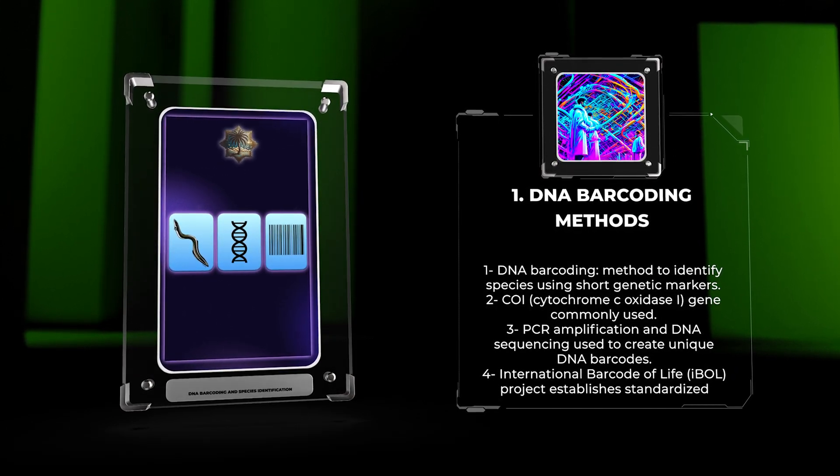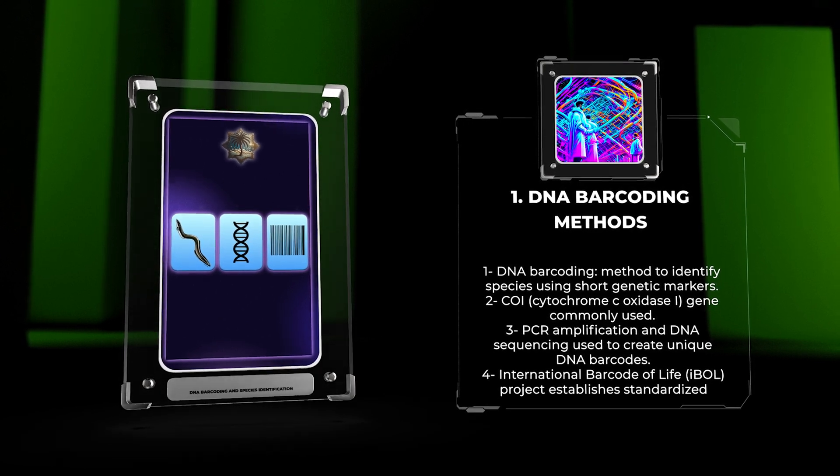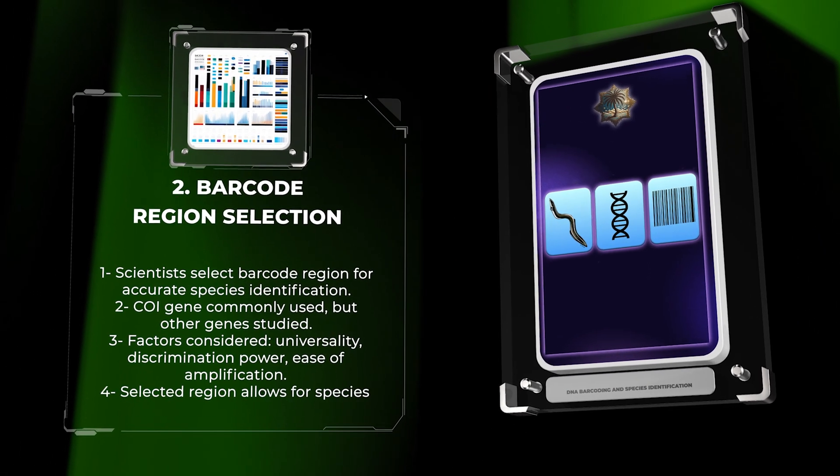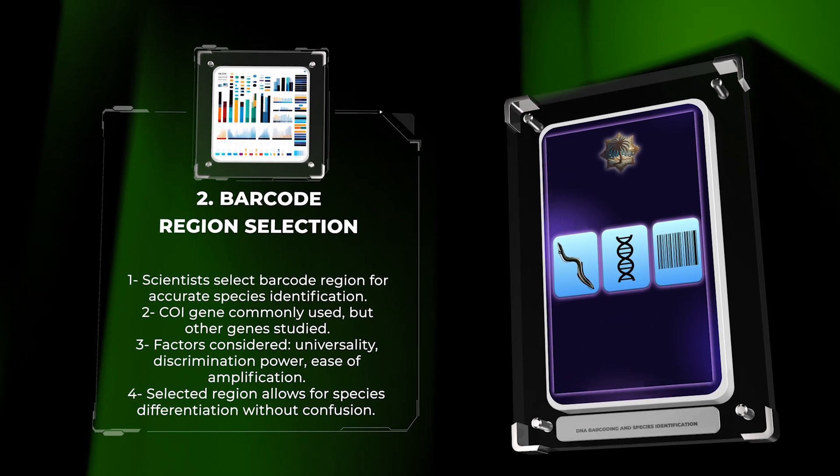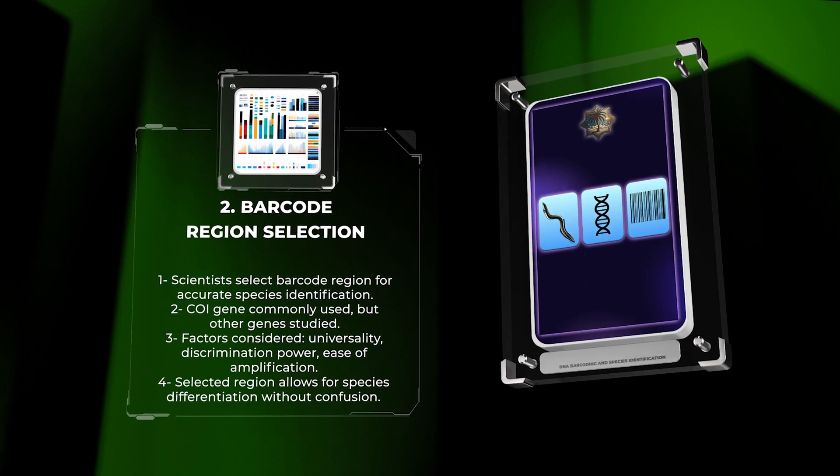The International Barcode of Life (IBOL) project has played a crucial role in establishing standardized methods for DNA barcoding. By carefully selecting a barcode region, scientists can accurately identify species. The commonly used COI gene is effective, but other genes like 16S rRNA, cytochrome B, and ITS regions have also been studied.